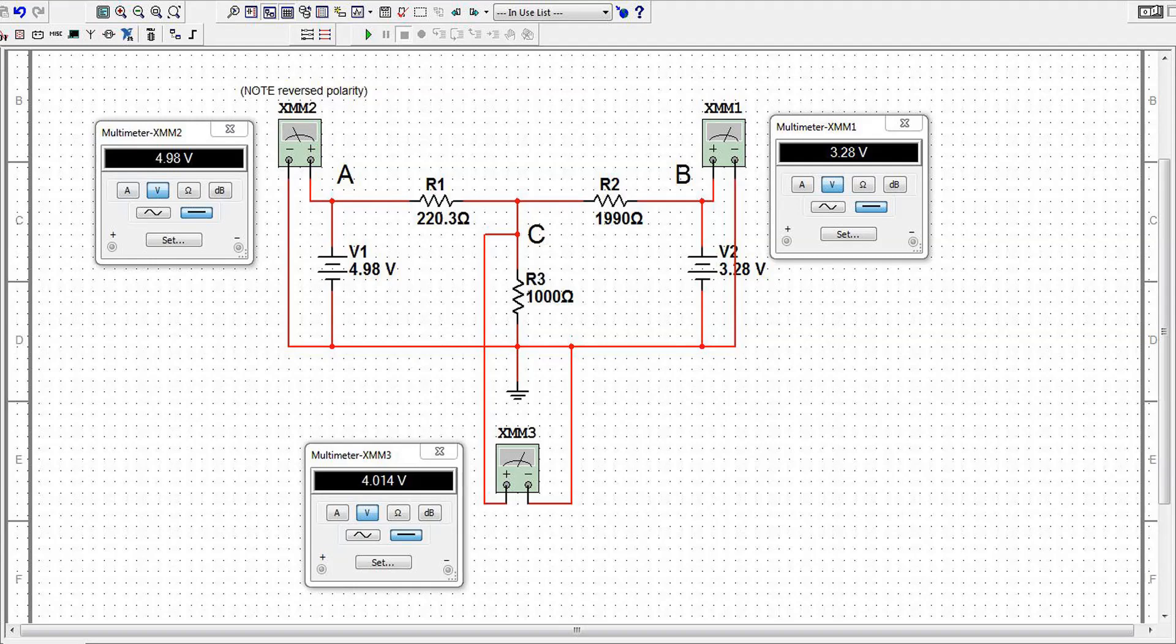And this is the Multisim function where you can see Multisim-wise putting in the voltages and the resistance values that I measured. I'm coming up with a voltage of 4.014 volts so that's actually pretty good considering the caliber of the equipment that we're using. And again like I said this is a very simplistic circuit and again you'll notice that I have a common ground.